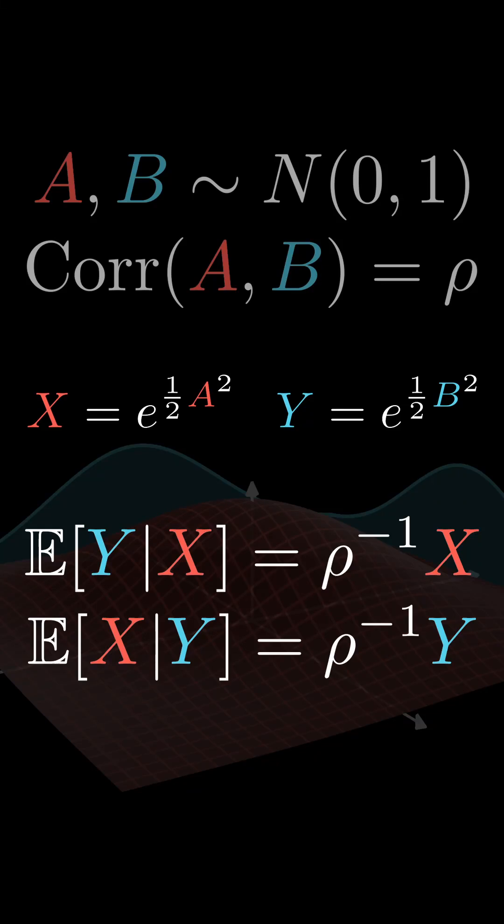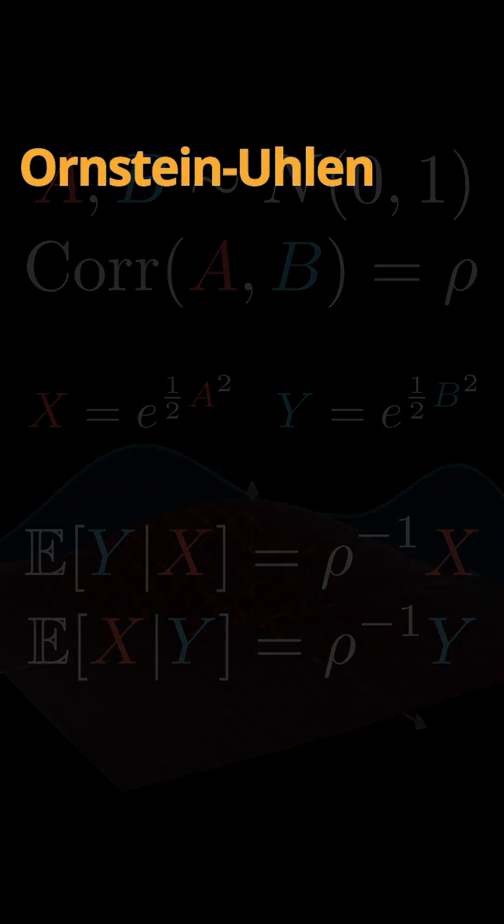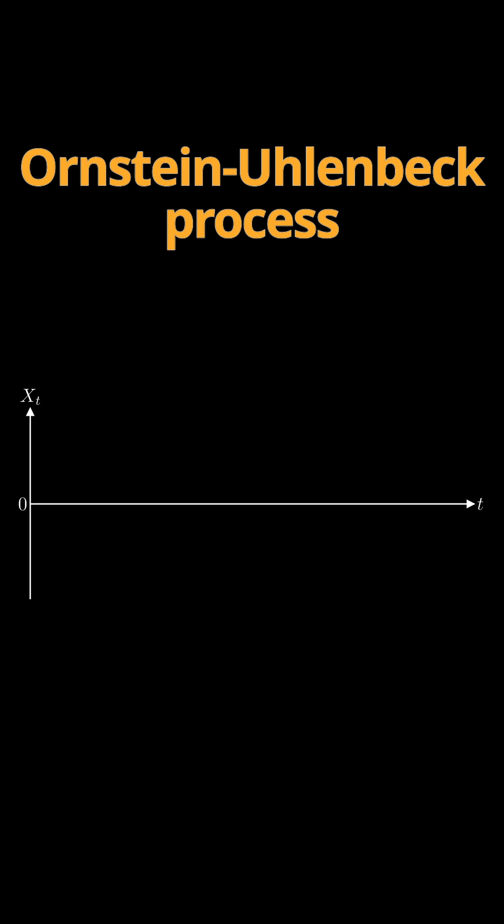To really mess with your mind, consider the following: an Ornstein-Uhlenbeck process. This is just a Brownian motion together with a drift towards the origin.